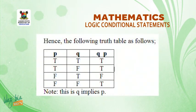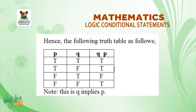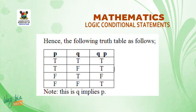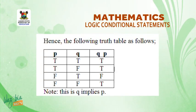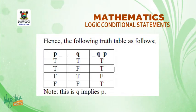Hence the following truth table with columns: p, q, and q implies p. Under p: T, T, F, F. Under q: T, F, T, F. Then: T and T gives T; T and F gives T; F and T gives F; F and F gives T. Don't forget that it is q that implies p, hence the results above.